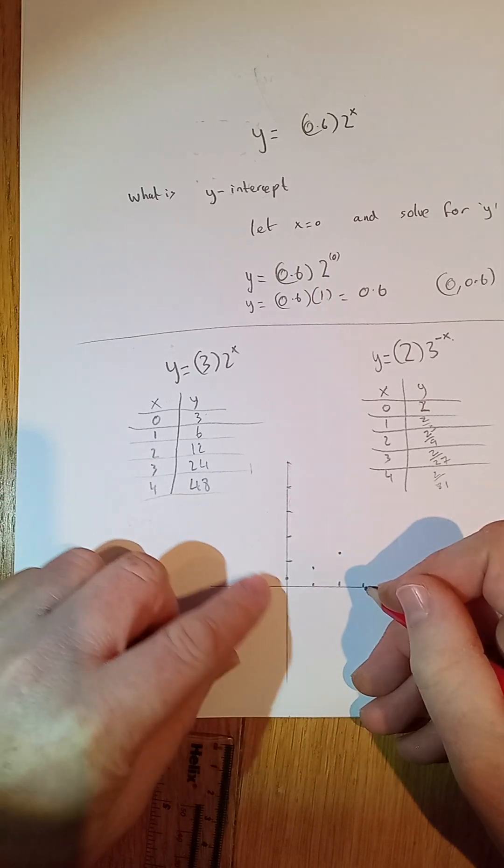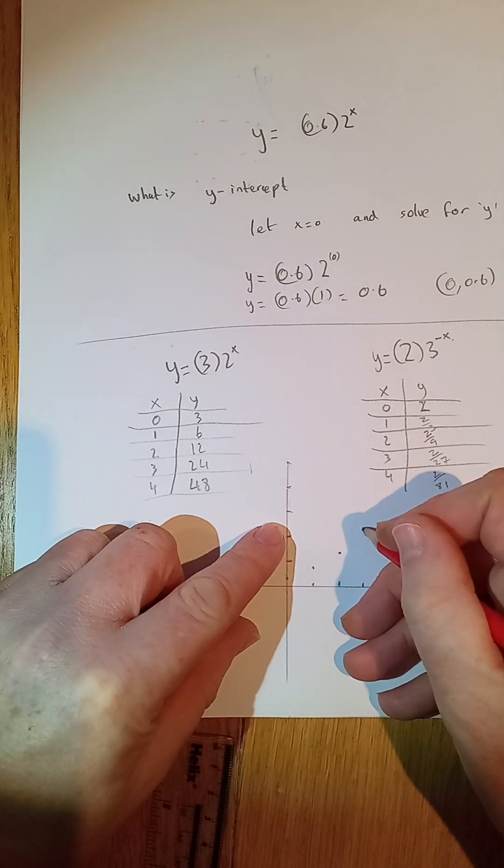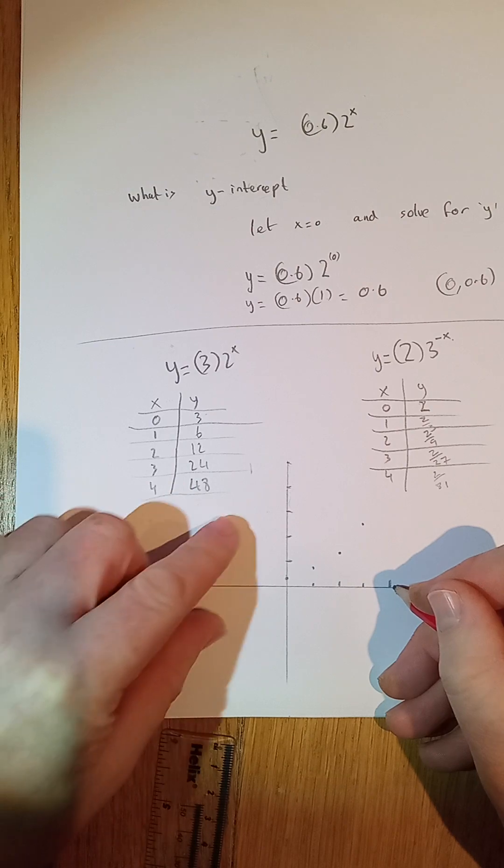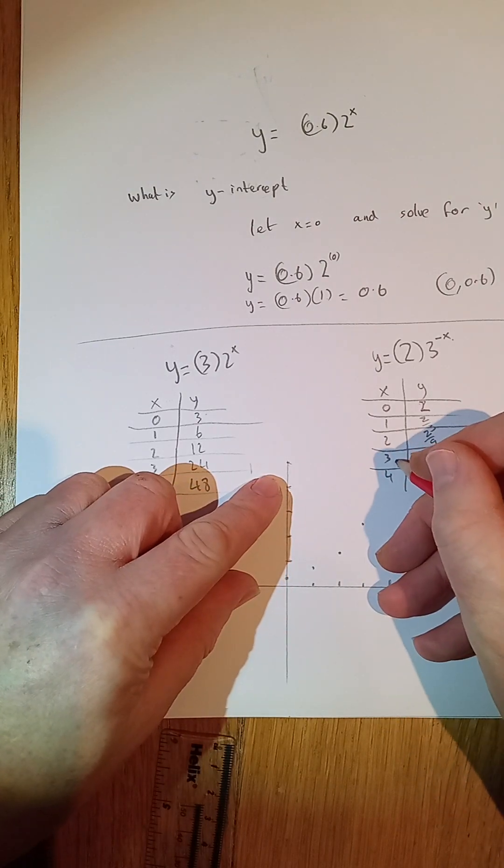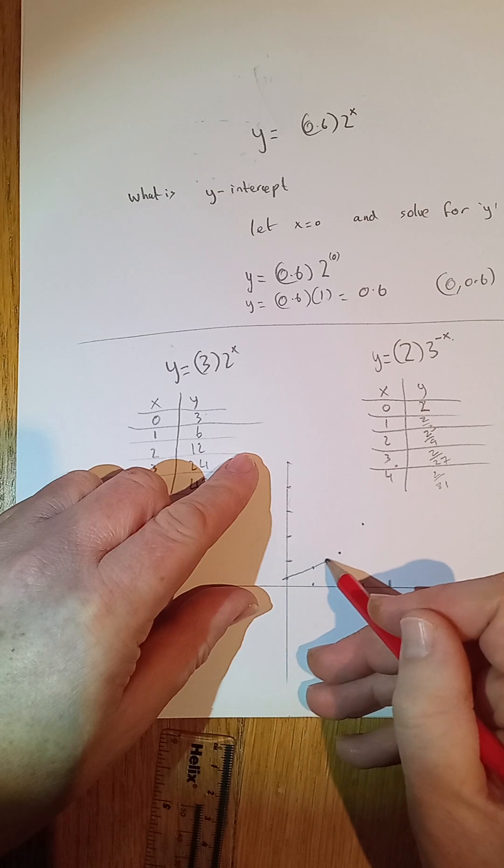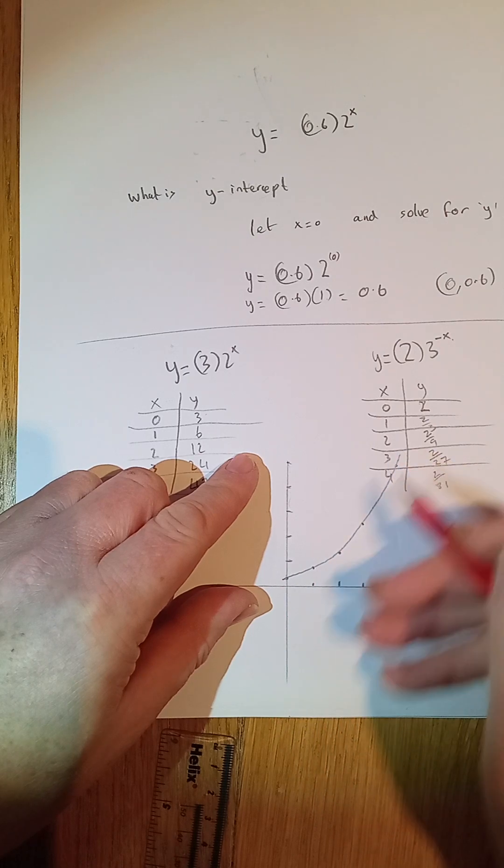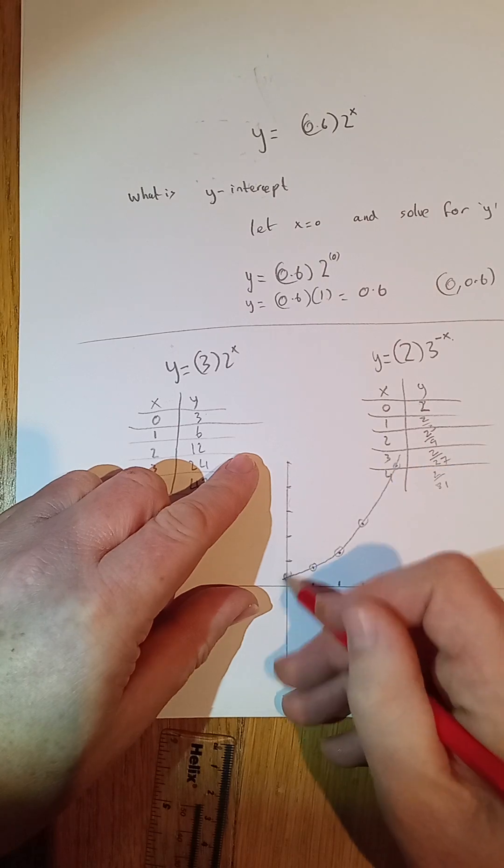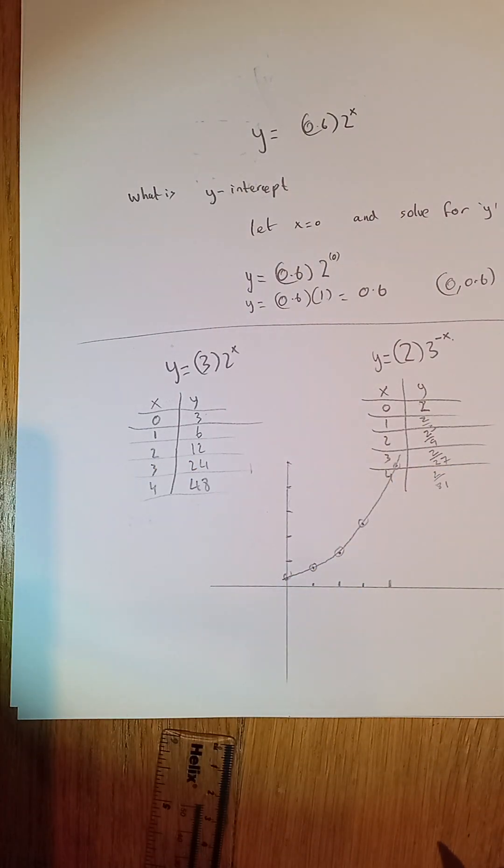When it's 3, it's 24. There's 10, 24-ish. And when it's 4, it's 48. So you're talking somewhere up there. So you can see your little points there. And there's your points done.